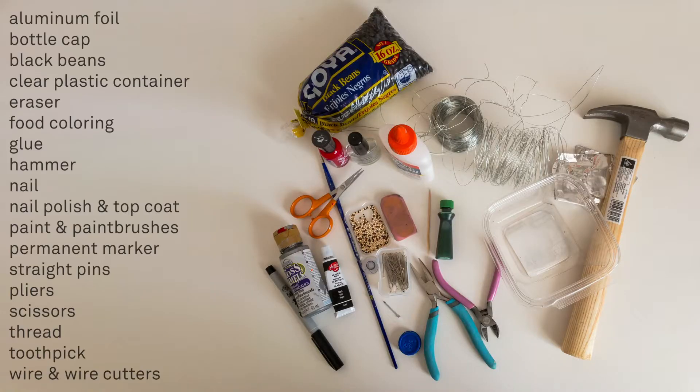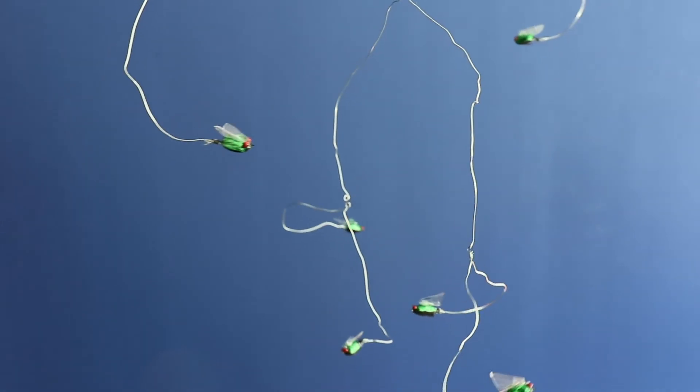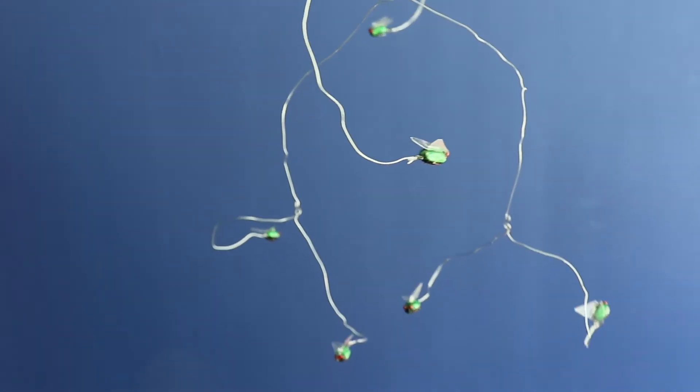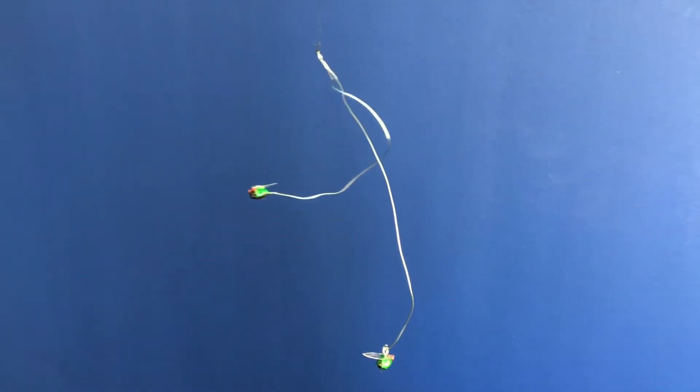Here are the materials you'll need for this project. Please pause the video here to get a closer look. You can design a mobile with many flies like this six fly mobile, or try this elegant, more simple two fly version. Either way, the wire can crumple up and the flies can tuck into a standard sized envelope.